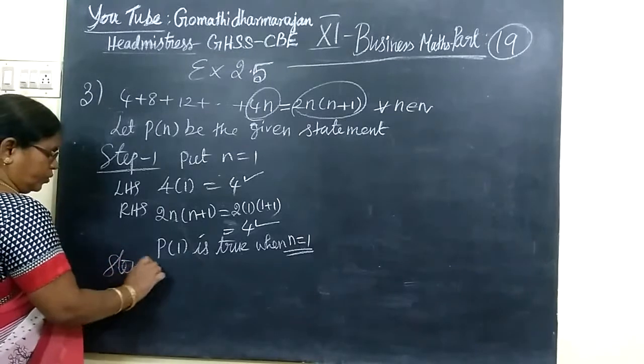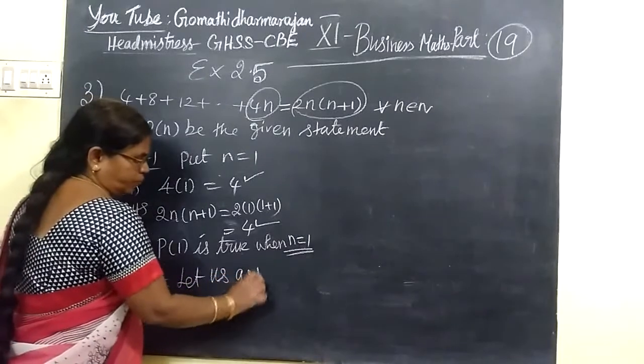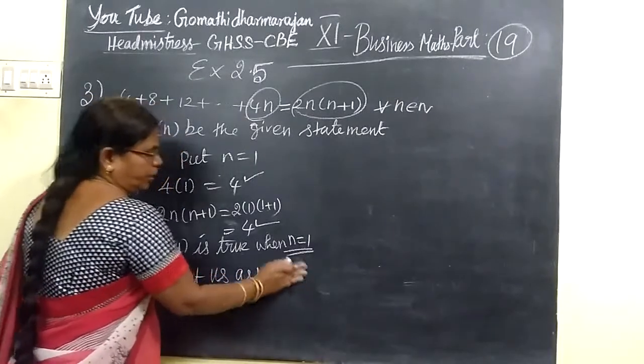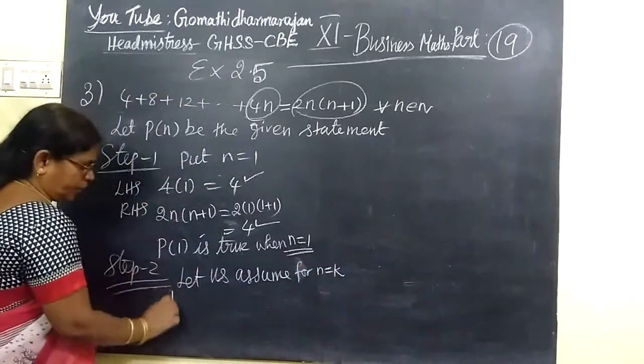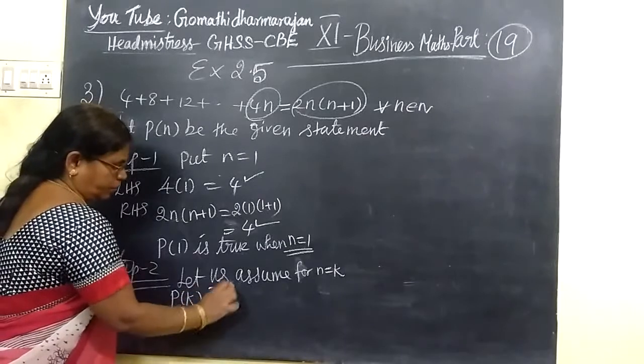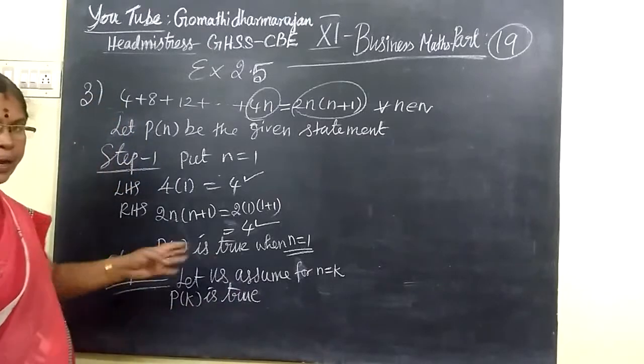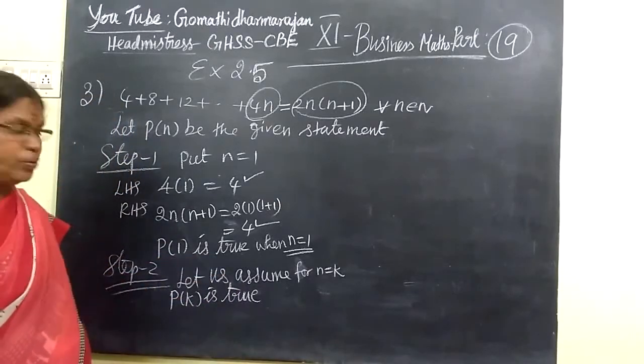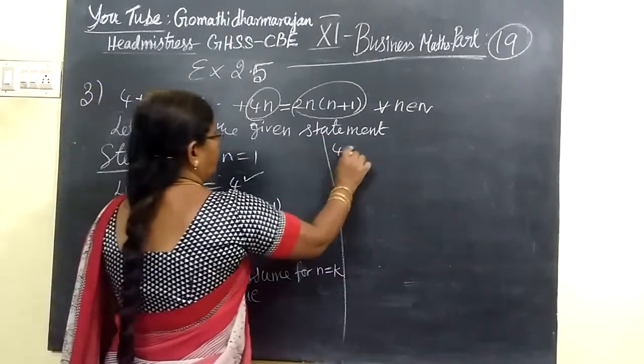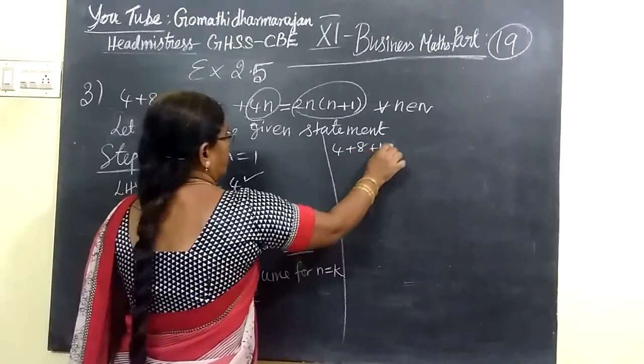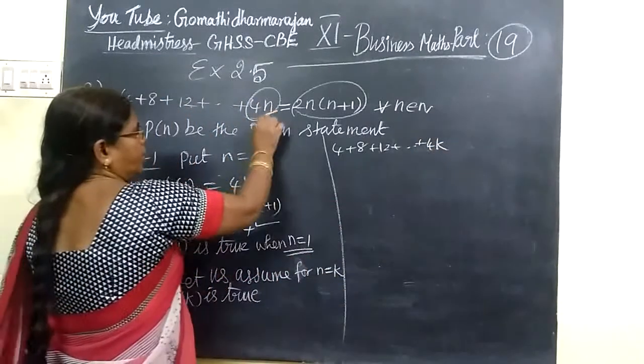So under step 2, we assume. That is assume, we assume. P of N equal to K, for N equal to K. P of K means 2, K as the positive natural number. P of K means 2 of the hypothesis as well.